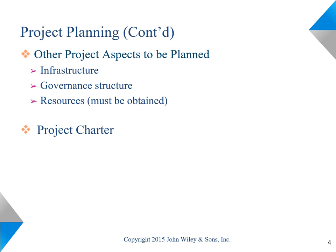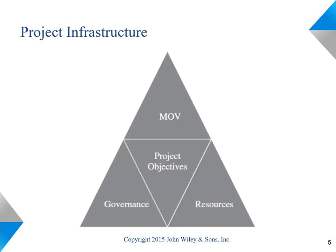We also need to plan the project infrastructure, its governance and resources. One of the first deliverables that we work on during the planning phase is the project charter. The project infrastructure is documented in the project charter and identifies the project's governance structure and all of the project resources.